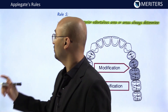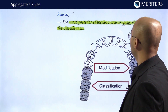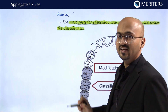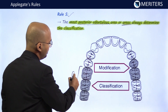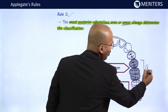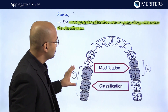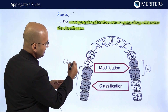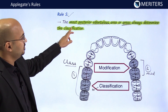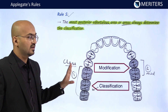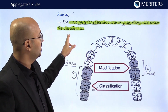The next rules determine the actual modification spaces and nomenclature for each case. Applegate's Rule Number 5 — an important rule — states that the most posterior edentulous area always determines the classification. For example, if there are two edentulous areas, the posterior-most area becomes the primary classification, while the other becomes the modification. The posterior-most edentulous area becomes the classification, and other edentulous areas become modification spaces.